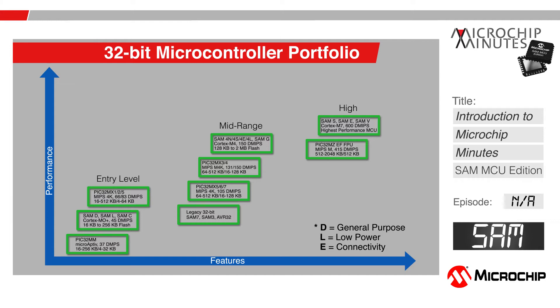If you look at our part numbering scheme in general, the SAM-D or D stands for general purpose, the L — SAM-L stands for low power, and the E stands for connectivity.